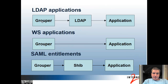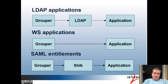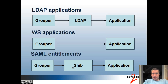For SAML-enabled applications expecting authorization data, or for cloud services, SAML entitlements may be a good idea. For LDAP applications, Grouper provisions your institution's LDAP and the application reads from there. For web service applications, the application could read directly from Grouper Web Services. For SAML entitlements, Grouper could be integrated with Shibboleth or whatever SAML software you're using, and then the application can get entitlements from there.